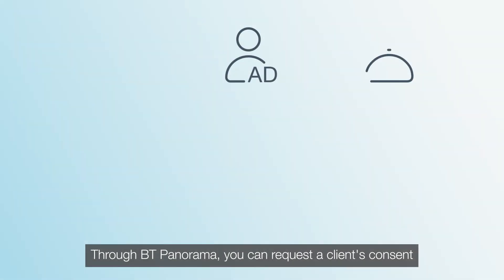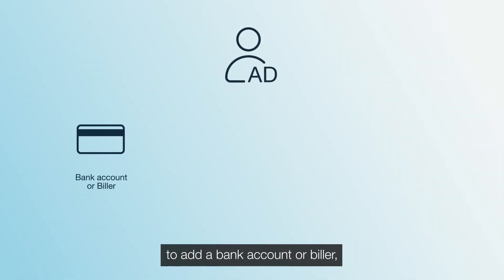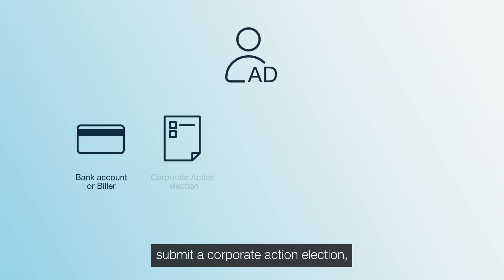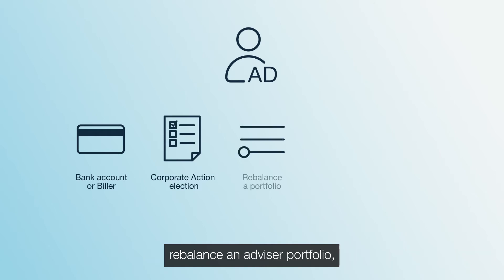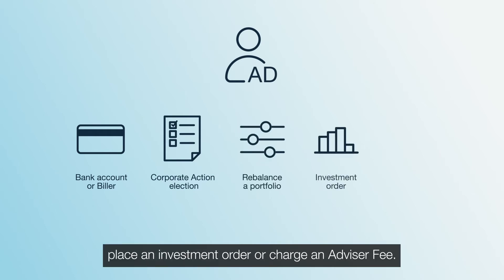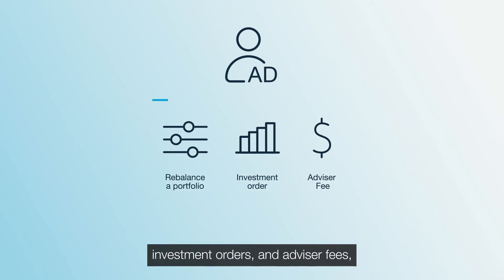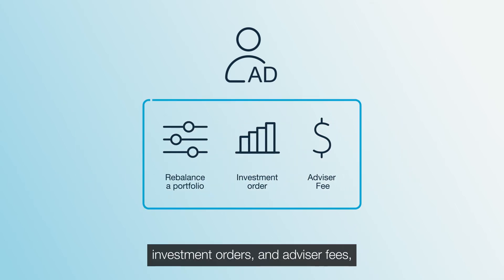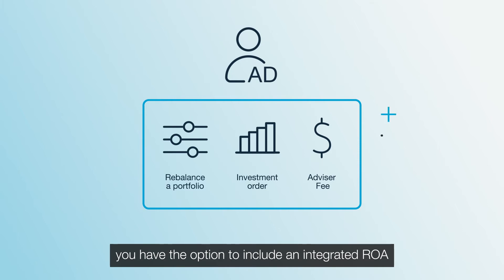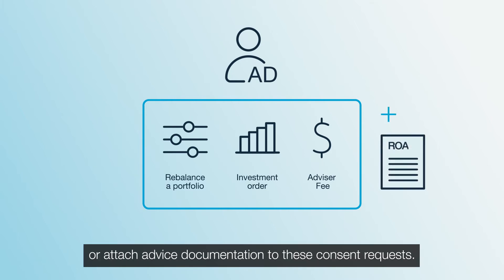Through BT Panorama, you can request the client's consent to add a bank account or biller, submit a corporate action election, rebalance an advisor portfolio, place an investment order, or charge an advisor fee. For advisor portfolio rebalances, investment orders, and advisor fees, you have the option to include an integrated ROA or attach advice documentation to these consent requests.